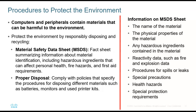MSDS sheets tell you the material's name, physical properties and makeup, hazardous ingredients, reactivity data — such as what happens if exposed to fire or explosion — procedures for spills or leaks, special precautions, health hazards, and protective equipment requirements. For example, you may need to wear a mask when working with a particular solvent, or gloves when handling certain materials.